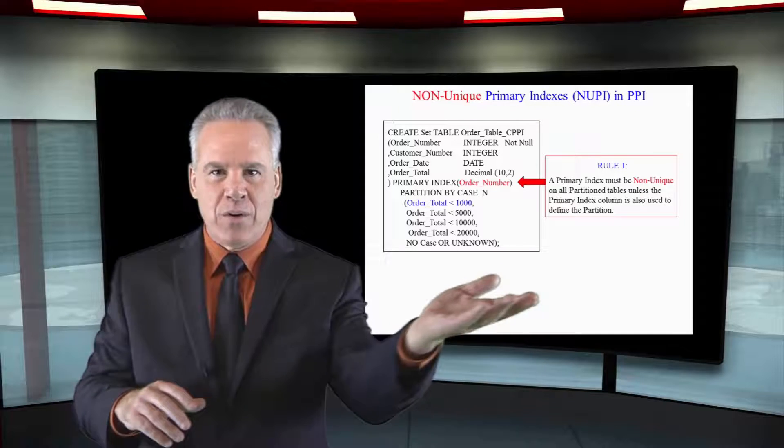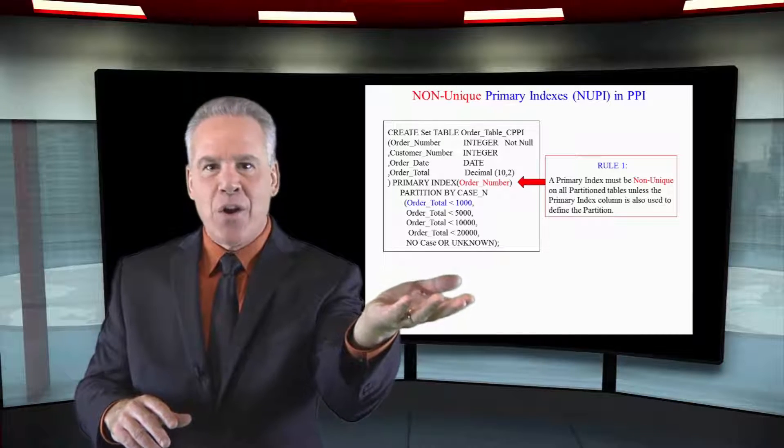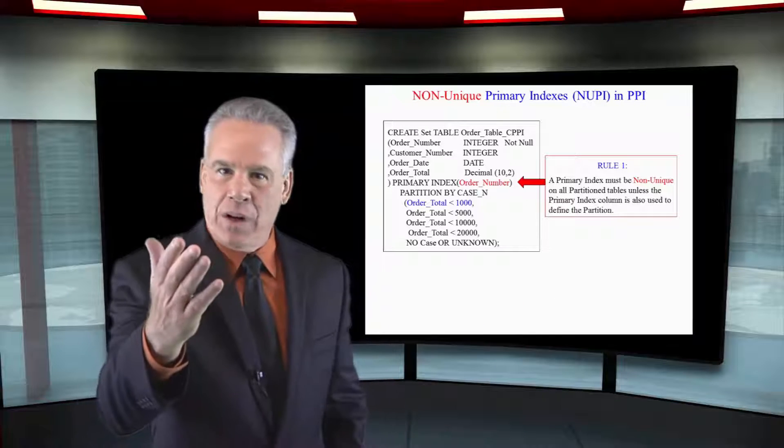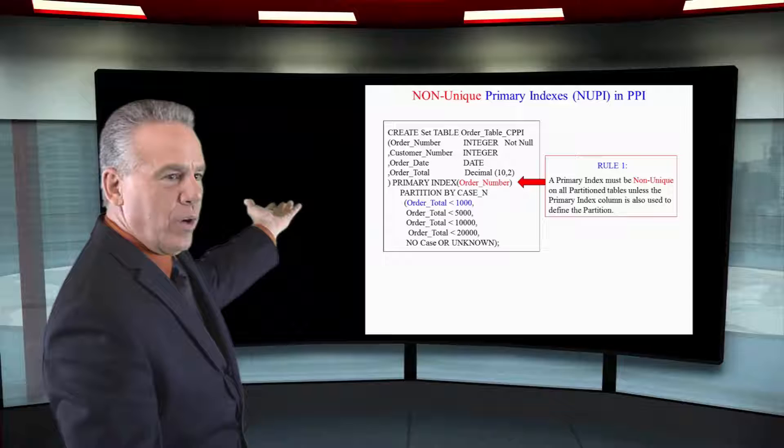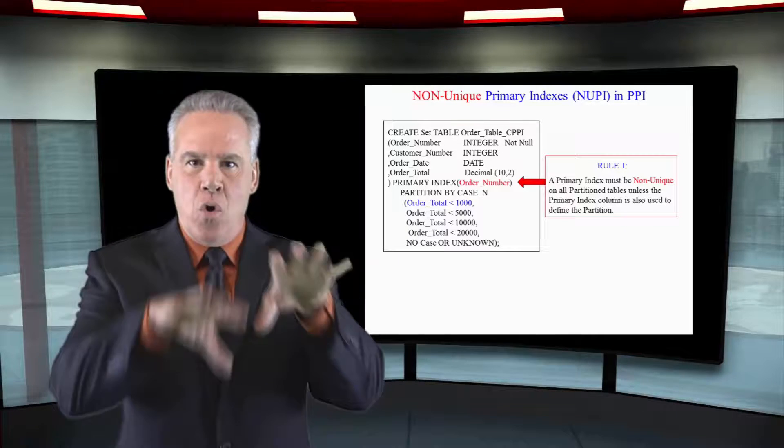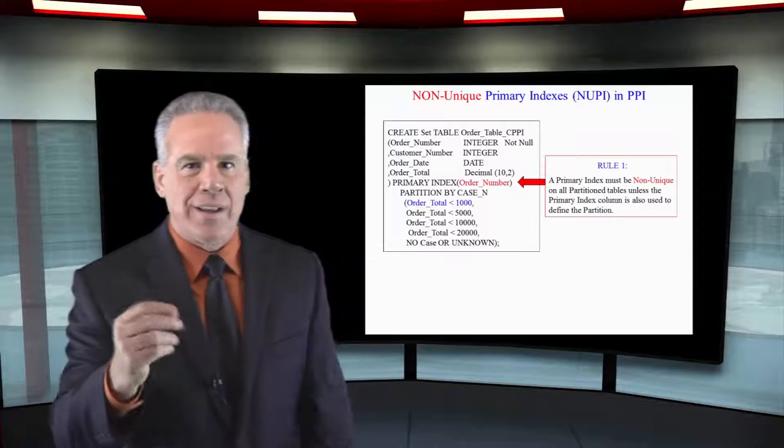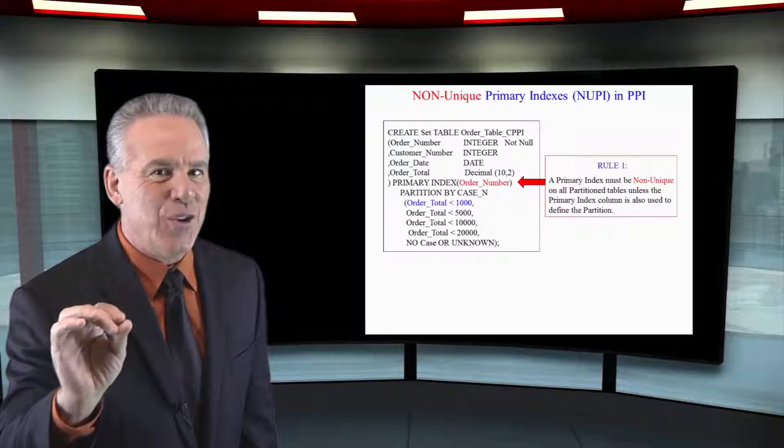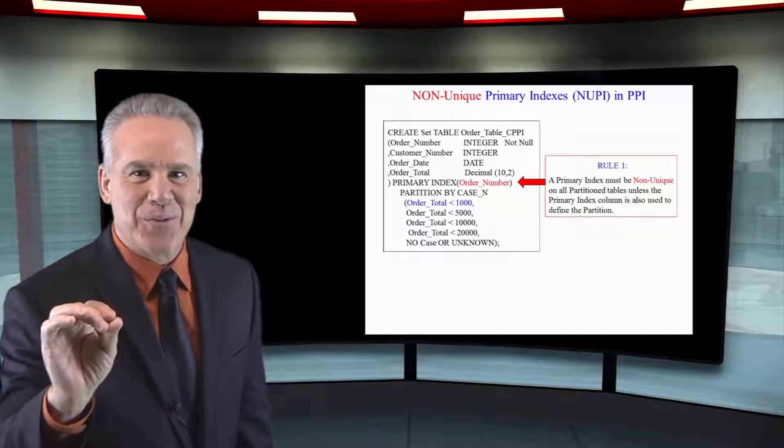If the primary index is not also part of the partitioning statement, and what I mean by that is we've got our primary index of order number, but we're partitioning by a case in order total, you have to make the primary index non-unique. That's a rule.